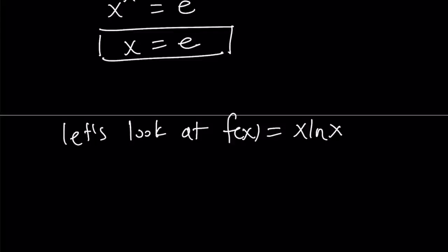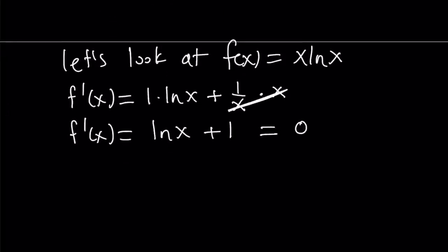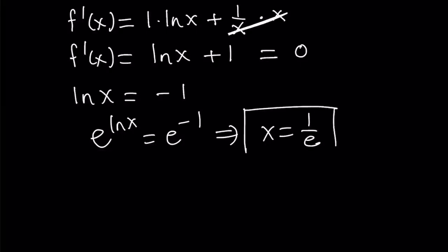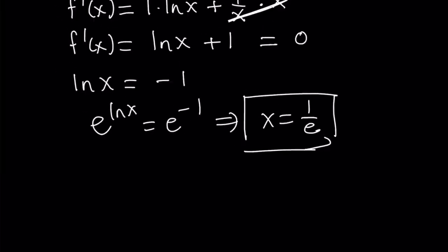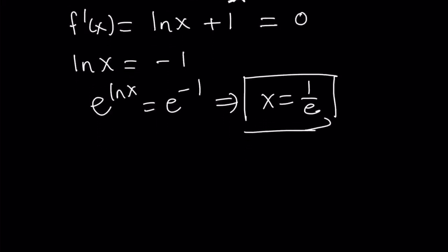In order to understand how this function behaves — where it increases, where it decreases, does it have a minimum or maximum, any inflection points — let's differentiate it. By using the product rule, the derivative of x times ln x plus the derivative of ln x (1 over x) times x, the x's cancel out and I end up with f prime equals ln x plus 1. Setting it equal to 0 to find critical points, we get ln x equals negative 1, and then raising e to the power of both sides, x equals 1 over e.